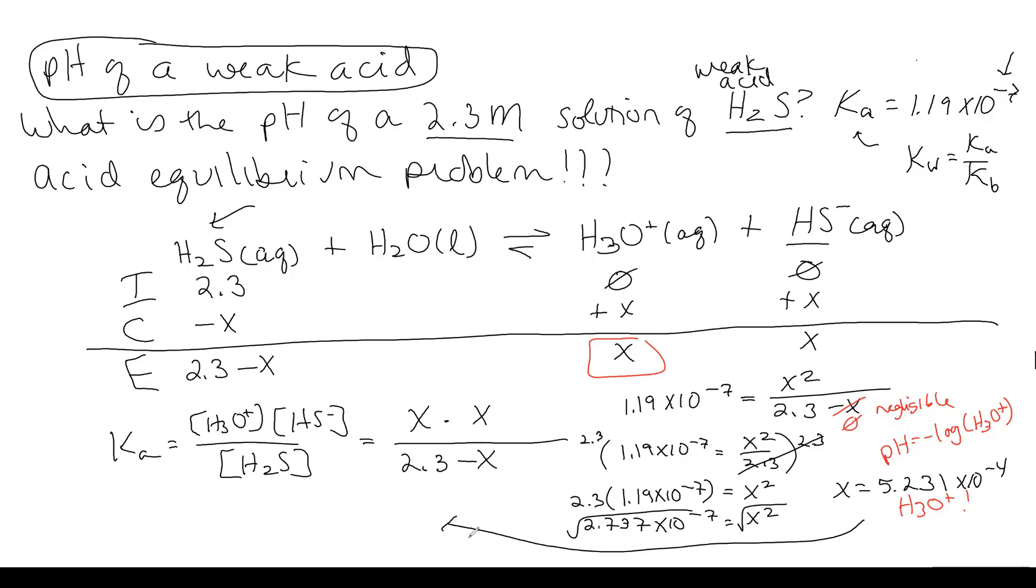Let's go ahead and we have pH equals negative log 5.231 times 10 to the negative 4. And that pH is equal to 3.28. Now, pH is a logarithm. So that means the sig figs are going to be the number of decimal places. Our original value for the acid, 2.3 molar, that's two sig figs. Our Ka has three. But since we have two sig figs for the 2.3 molar concentration, we have to go with that. So we end up with two decimal places for our pH.